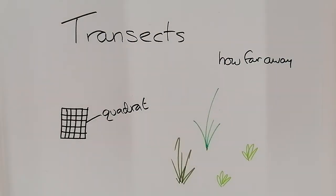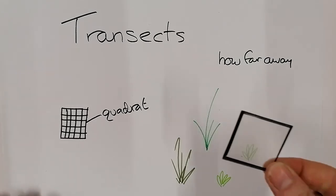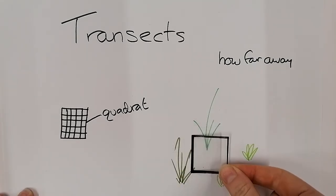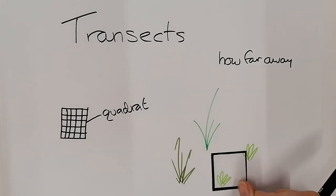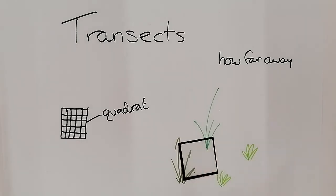They tend to be about 50 centimeters square, and you put them on the ground to see how many plants are in an area and which plants are in an area. So I've got a little one here. If I put my quadrat here, I would have this type of plant in it, and there would only be one.